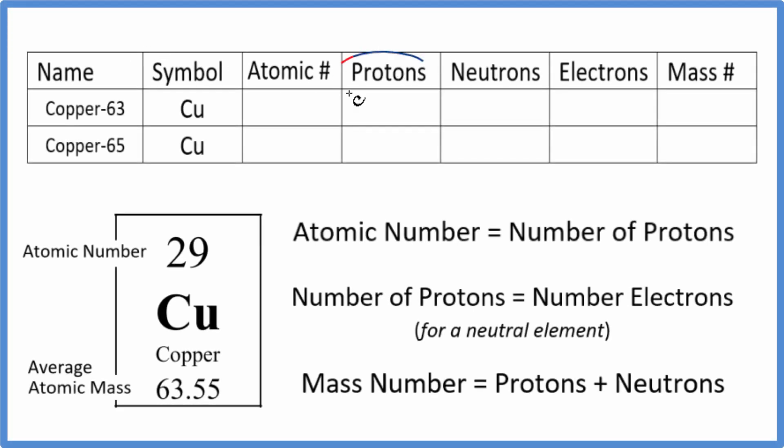In this video we'll find the protons, neutrons, electrons, and mass number for Cu, that's copper. The first thing to note, copper has two major isotopes. The only thing that differs with isotopes are the neutrons and the mass number. We'll talk more about neutrons and mass number in a minute.